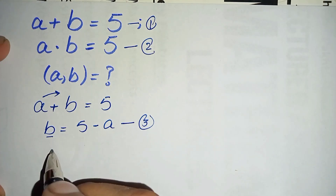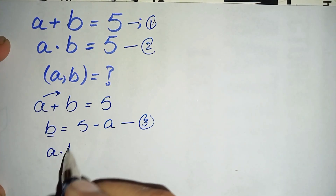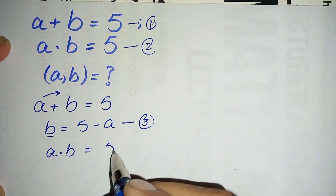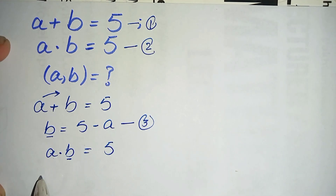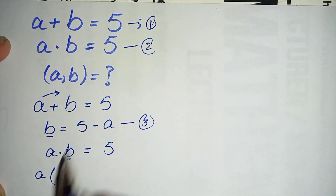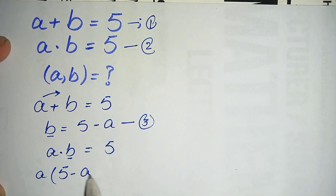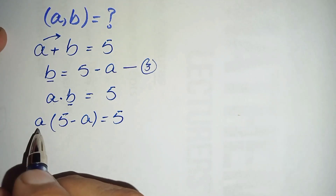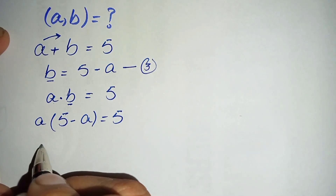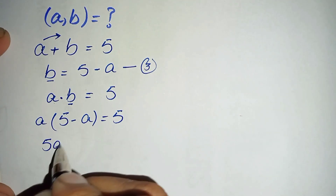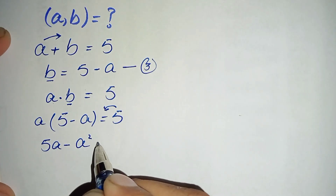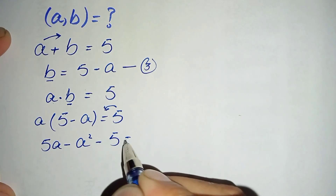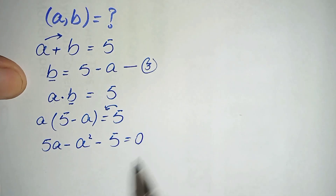From equation number three, b equals 5 minus a, we substitute the value of b into equation number two. Equation number two is a times b equals 5, so we replace b with its value: a times (5 minus a) equals 5. Multiplying a inside the parenthesis gives 5a minus a², and moving 5 to the left-hand side gives minus 5 equals 0.